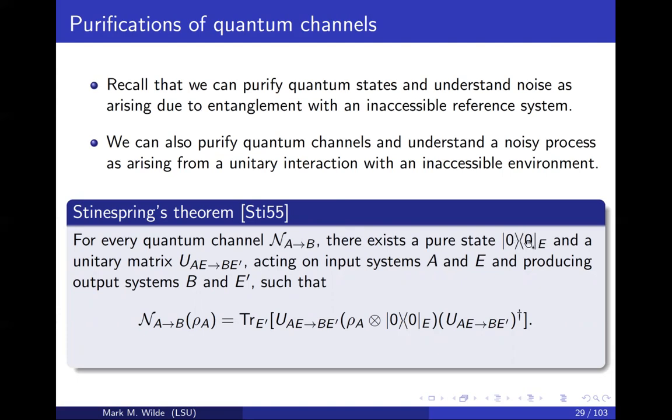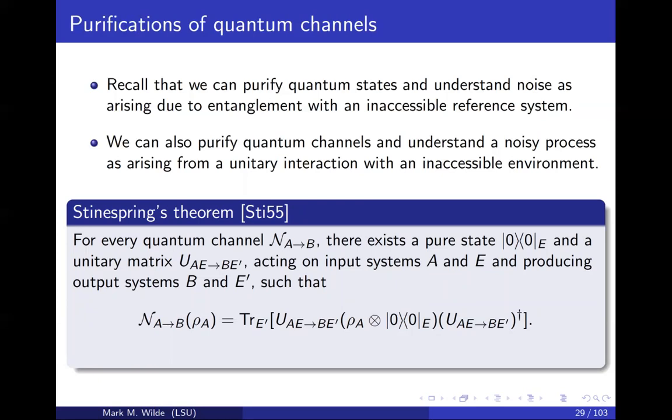The theorem says that for every quantum channel, you can find a pure state of the environment and a unitary matrix that acts on the input in the environment and produces an output system B and the environment that has a possibly different dimension as the original environment, such that the original channel is recovered by three steps: tensor in the pure state, perform the unitary evolution on the joint system and then trace out the environment. The trace out corresponds to not having access to the environment. That's possible for every quantum channel.